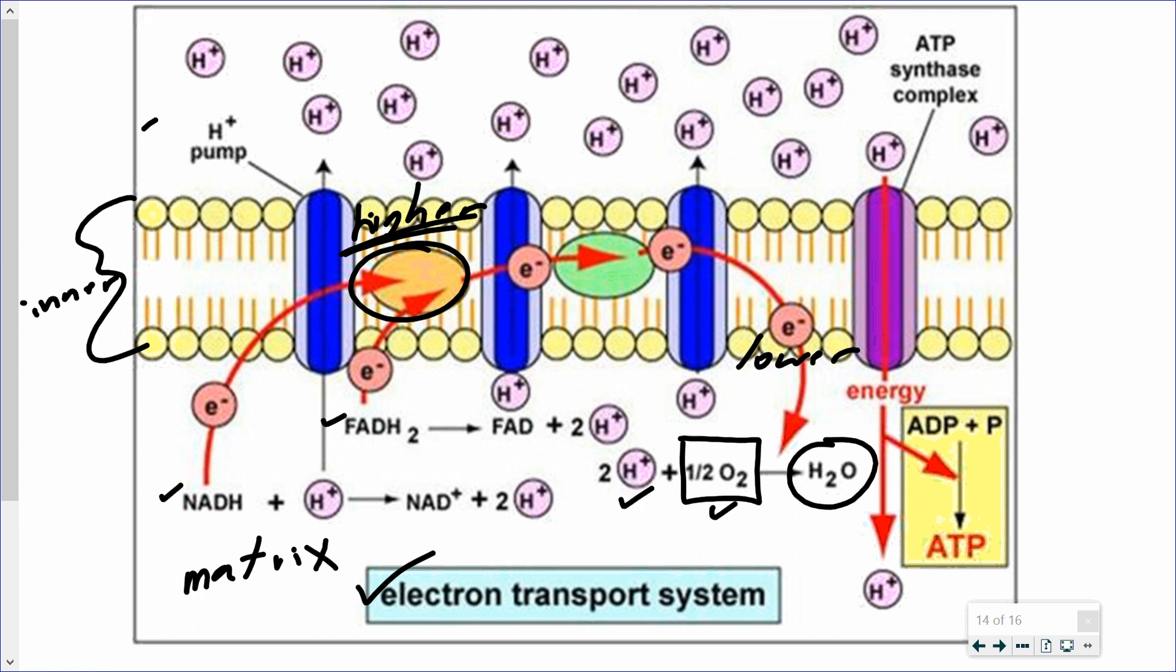Keep in mind, the other reactant, the glucose, was already broken down way at the beginning, the first stage in glycolysis. And carbon dioxide, the other product along with water that is produced in cellular respiration, that was produced in the intermediate step, going from pyruvate to acetyl-CoA, and in the Krebs cycle.